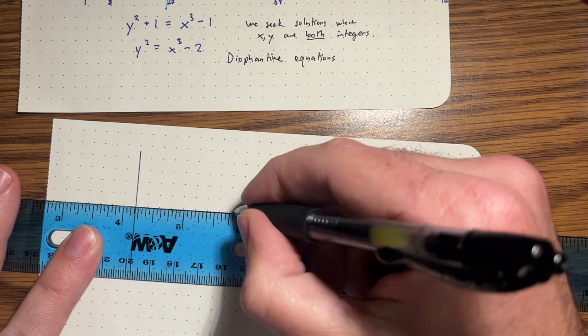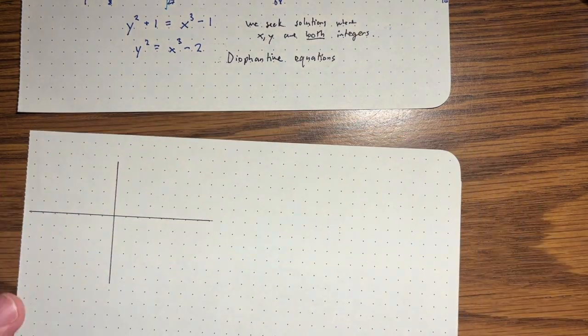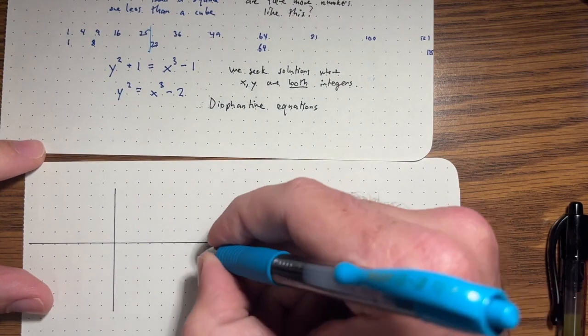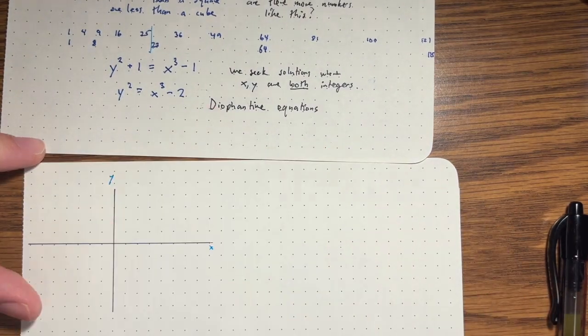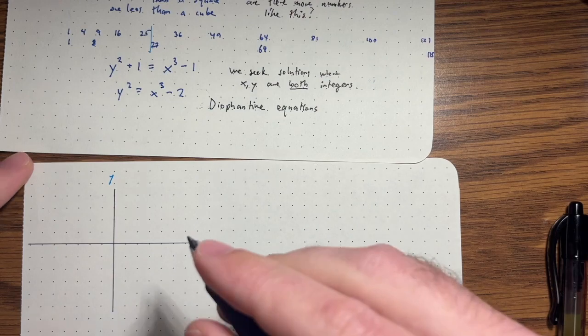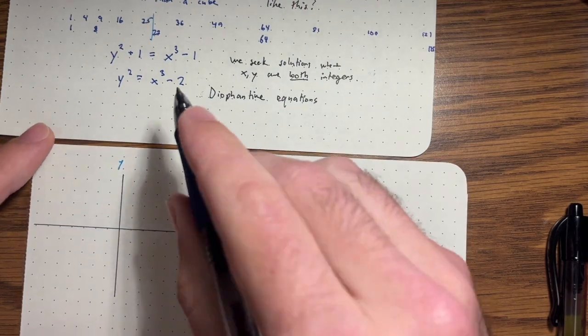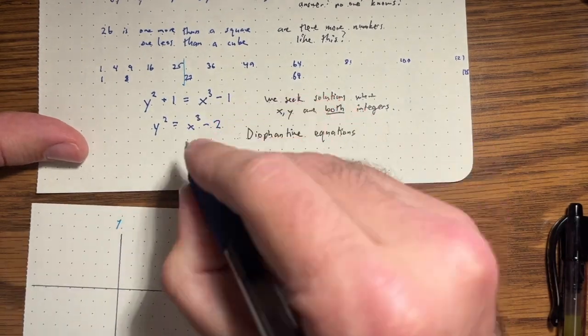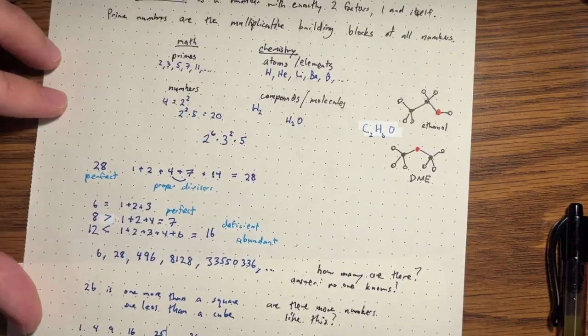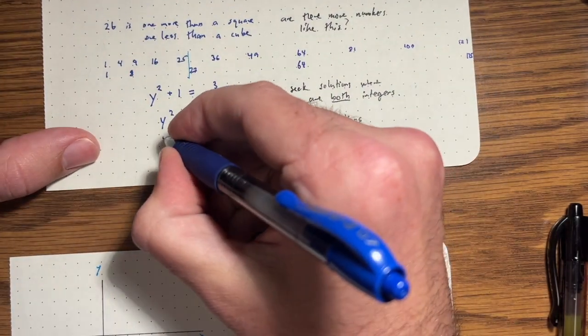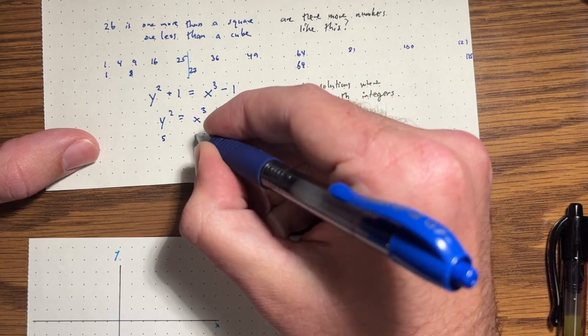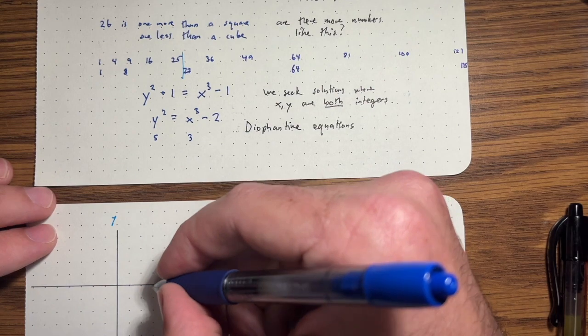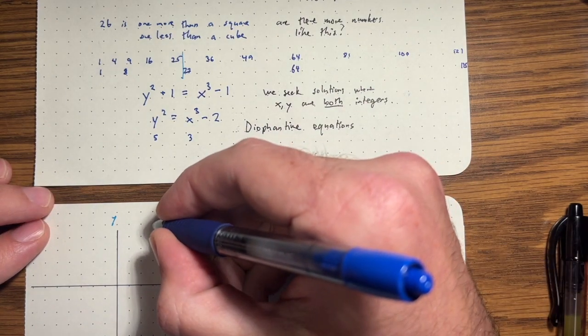One other thing you could do here is you could try to graph this equation. So what kind of object is this? This is a curve right here. It's a curve in the X, Y plane. So let's say X, Y, what does that curve look like? Well, it's going to include, notice it's going to include the point corresponding to 26, which would be Y equals five and X equals three, three cubed minus two is five squared. So that's this point here.